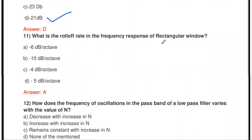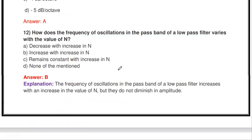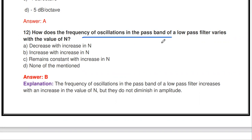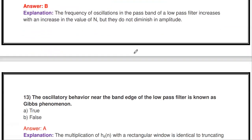The next question: what is the roll-off rate in the frequency response of the rectangular window? The roll-off rate is the rate of decrease in the frequency response. For the rectangular window, the roll-off rate is −6 dB per octave. Also, the frequency of oscillation in the passband of a low-pass filter increases with an increase in the value of N.